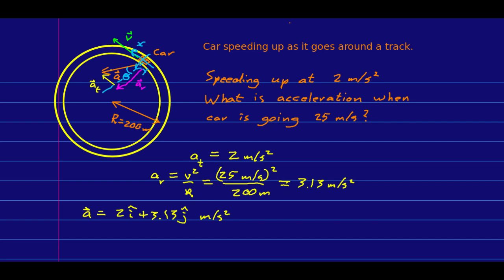The only interaction between the car and anything other than the earth is with the road. So the force producing this acceleration must be static friction pointing in that direction. If we knew the inertia of the car, we could find the magnitude of that static friction force.